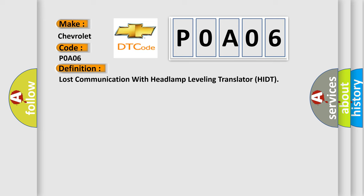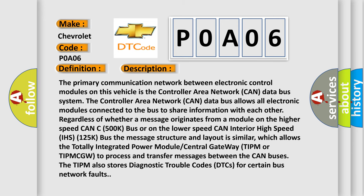The primary communication network between electronic control modules on this vehicle is the Controller Area Network CAN data bus system. The CAN data bus allows all electronic modules connected to the bus to share information with each other, regardless of whether a message originates from a module on the higher speed CAN C500k bus or on the lower speed CAN Interior High Speed IHS 125k bus. The message structure and layout is similar, which allows the Totally Integrated Power Module Central Gateway TIPM or TIPMCGW to process and transfer messages between the CAN buses. The TIPM also stores diagnostic trouble codes DTCs for certain bus network faults. This diagnostic error occurs most often in these cases.